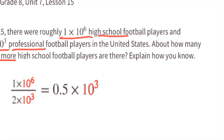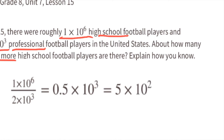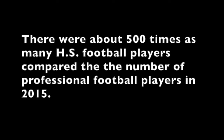Focusing on 1/2, that equals 0.5. And 10⁶/10³ = 10³. So the expression is 0.5 × 10³. Making 0.5 ten times greater gives 5, and making 10³ ten times smaller gives 10² = 100. So 5 × 100 = 500. There were about 500 times as many high school football players as professional players in 2015.